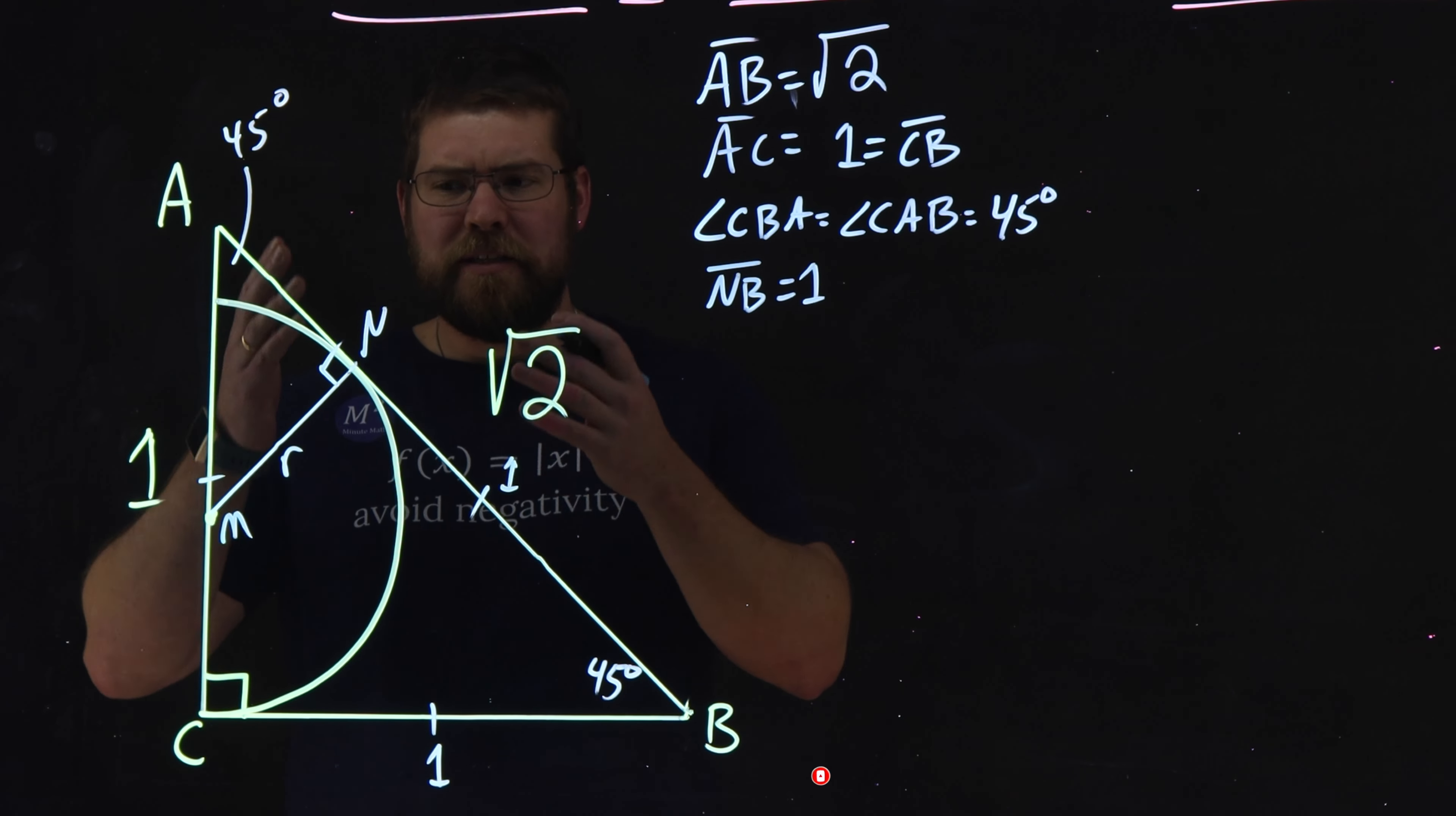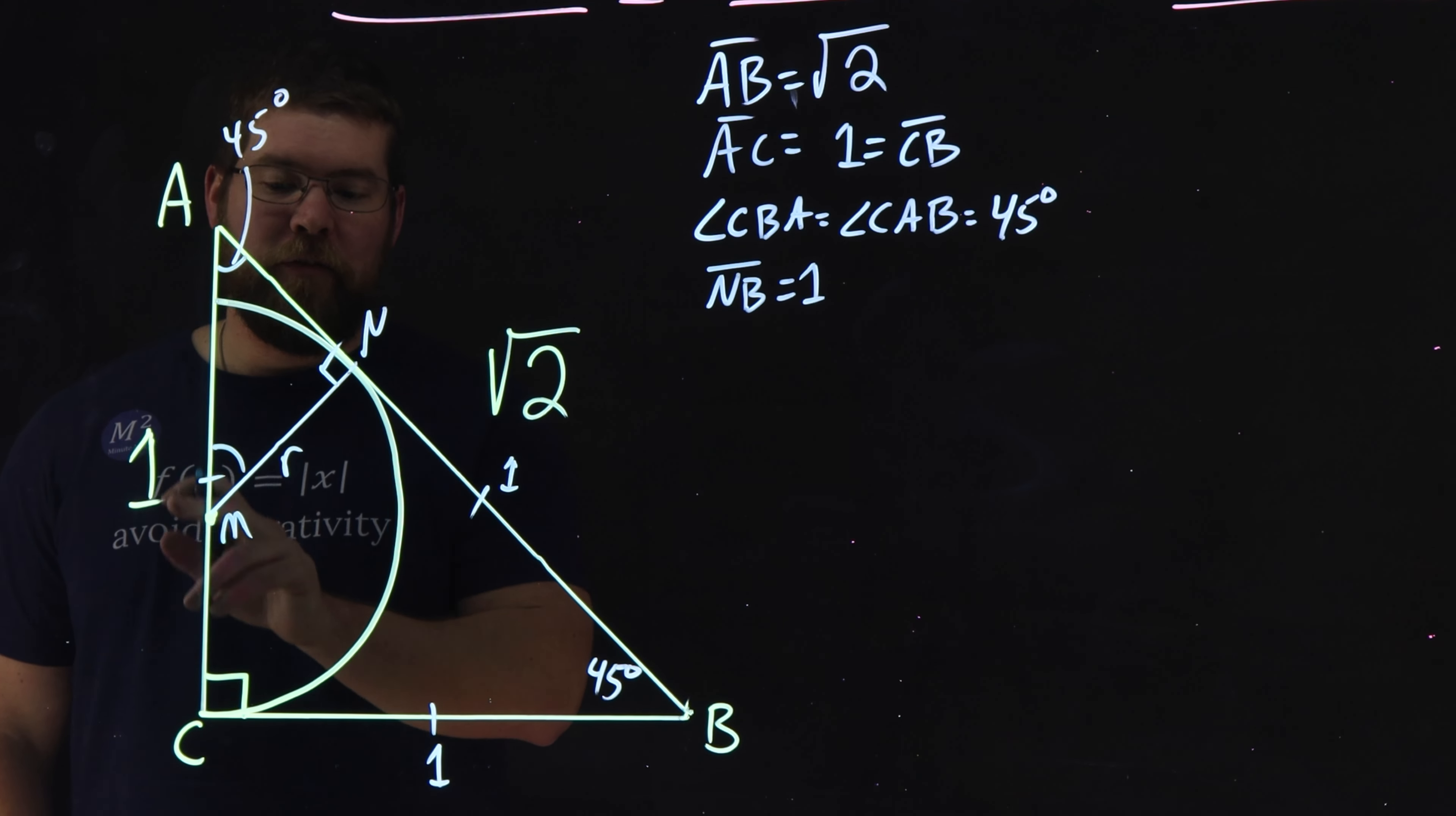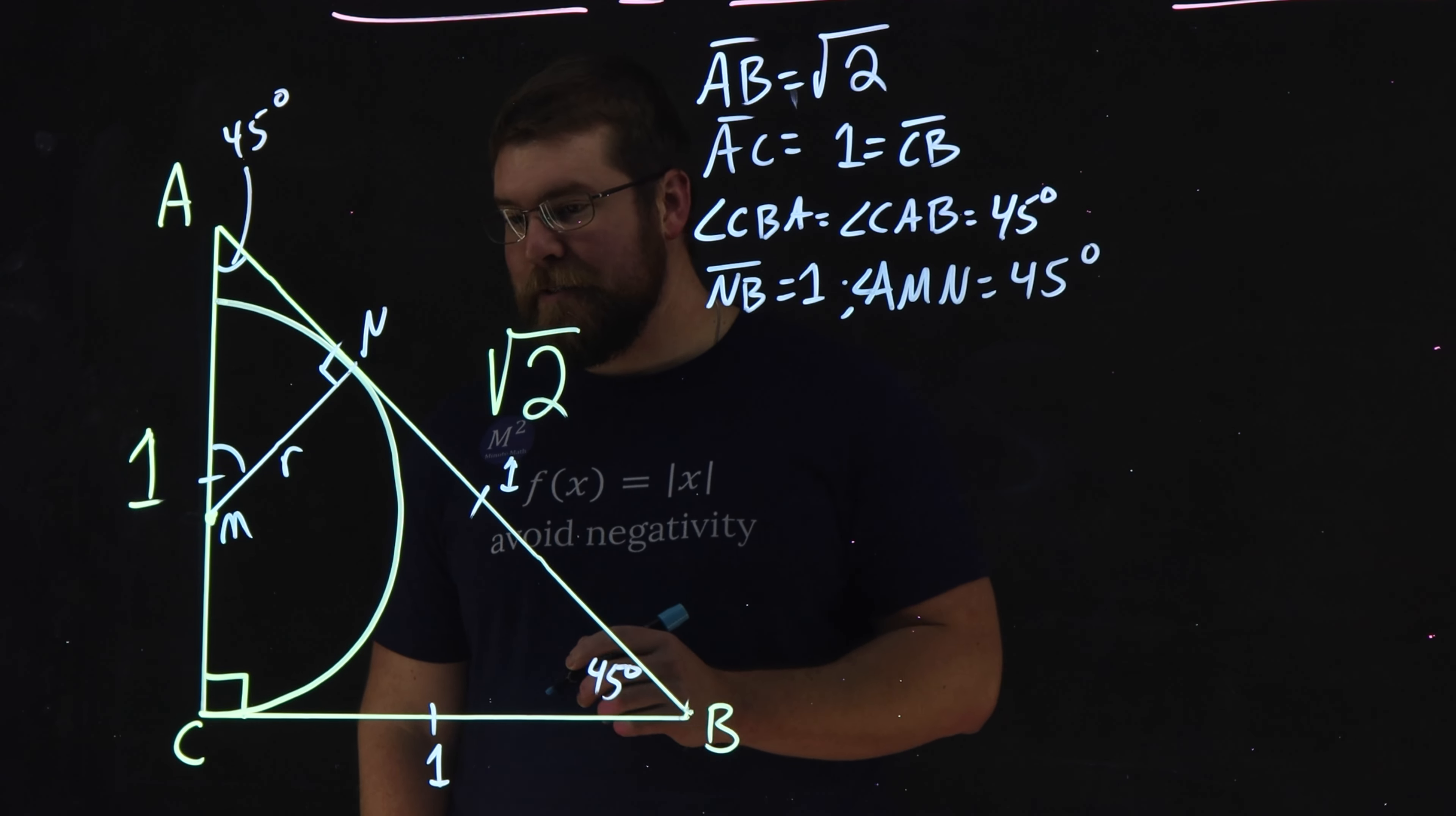But what does that help us? Well, we have 45 degrees for that angle CAB. That means also we got 45 degrees right here for angle AMN. So angle AMN is also equal to 45 degrees.